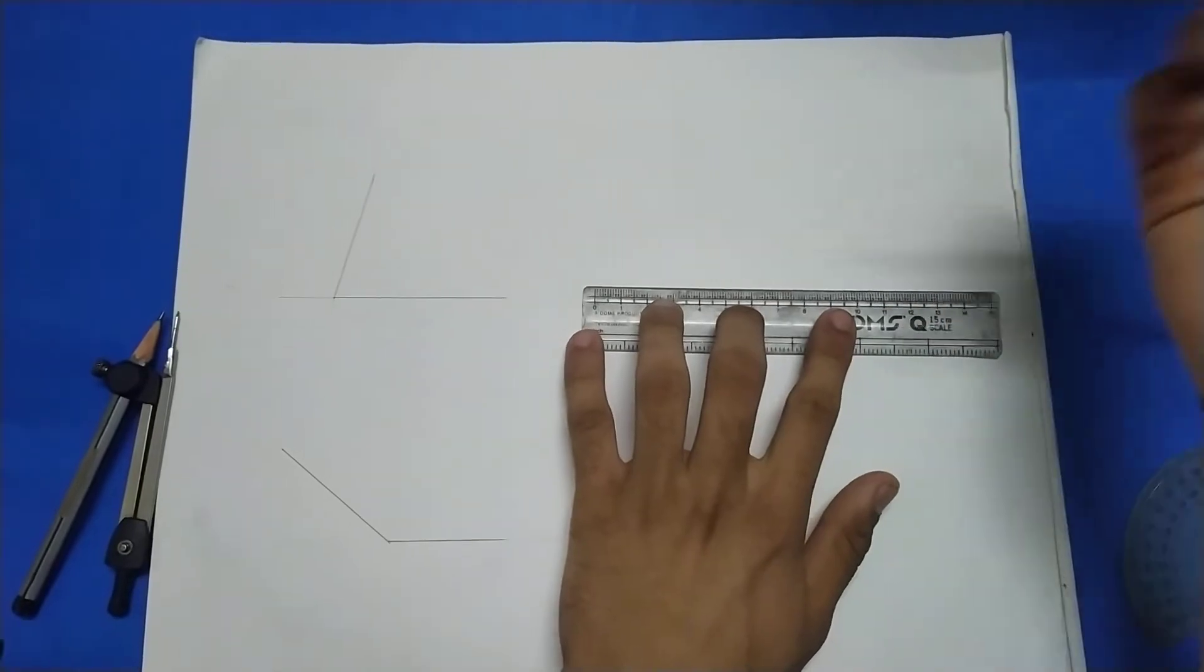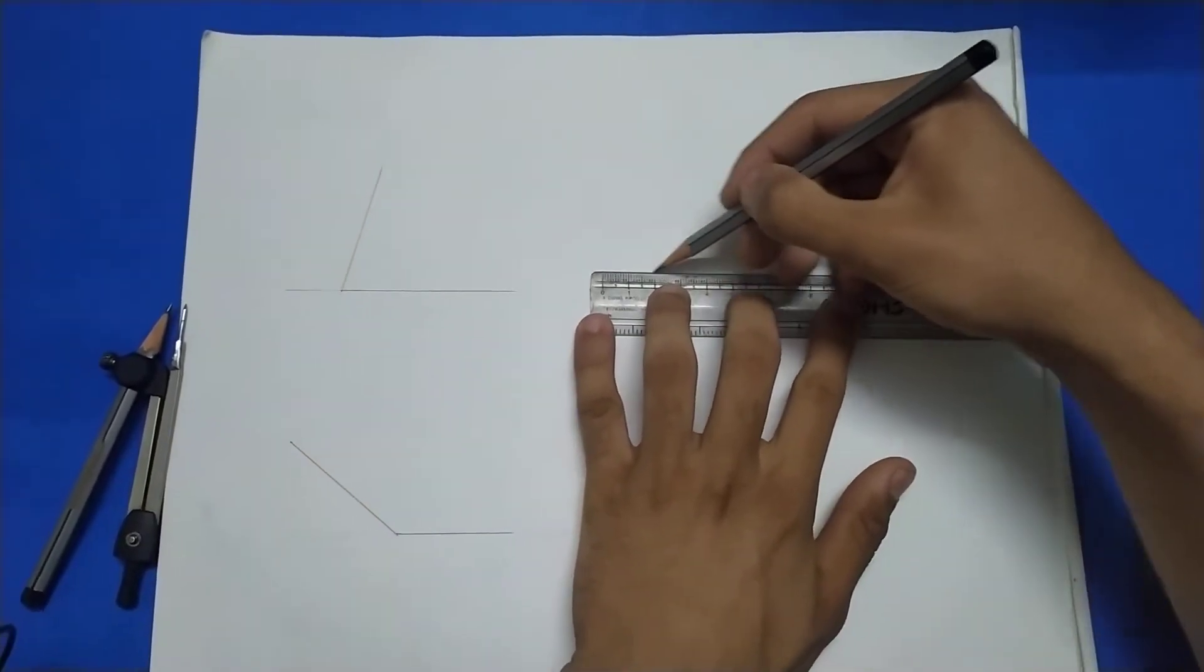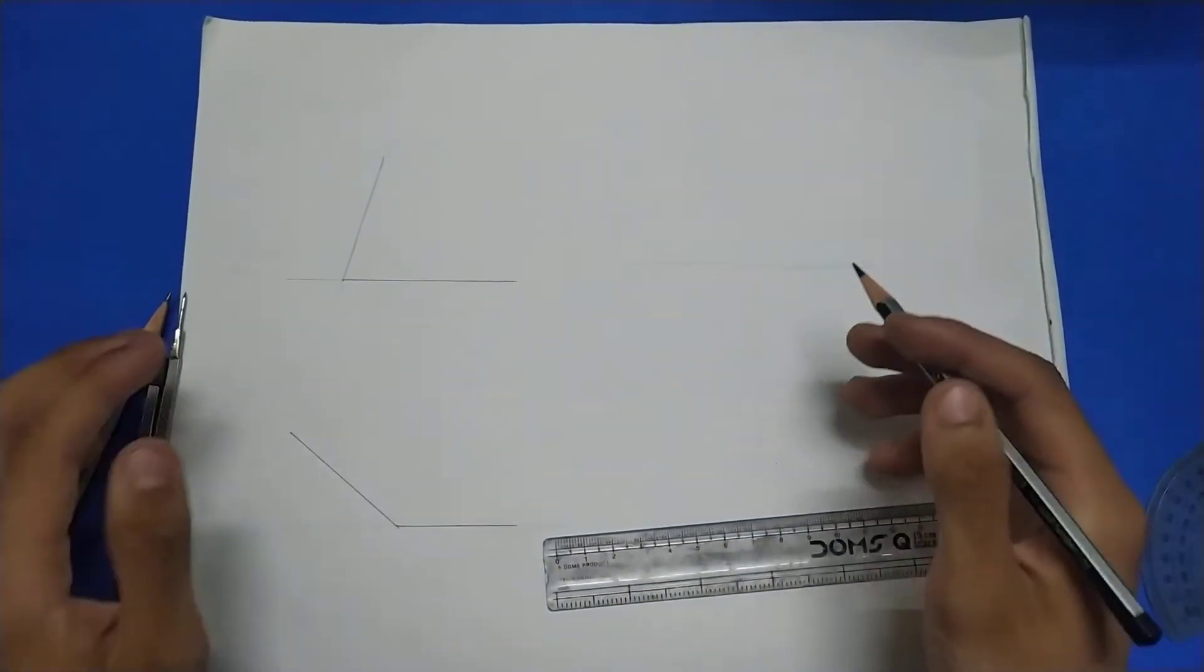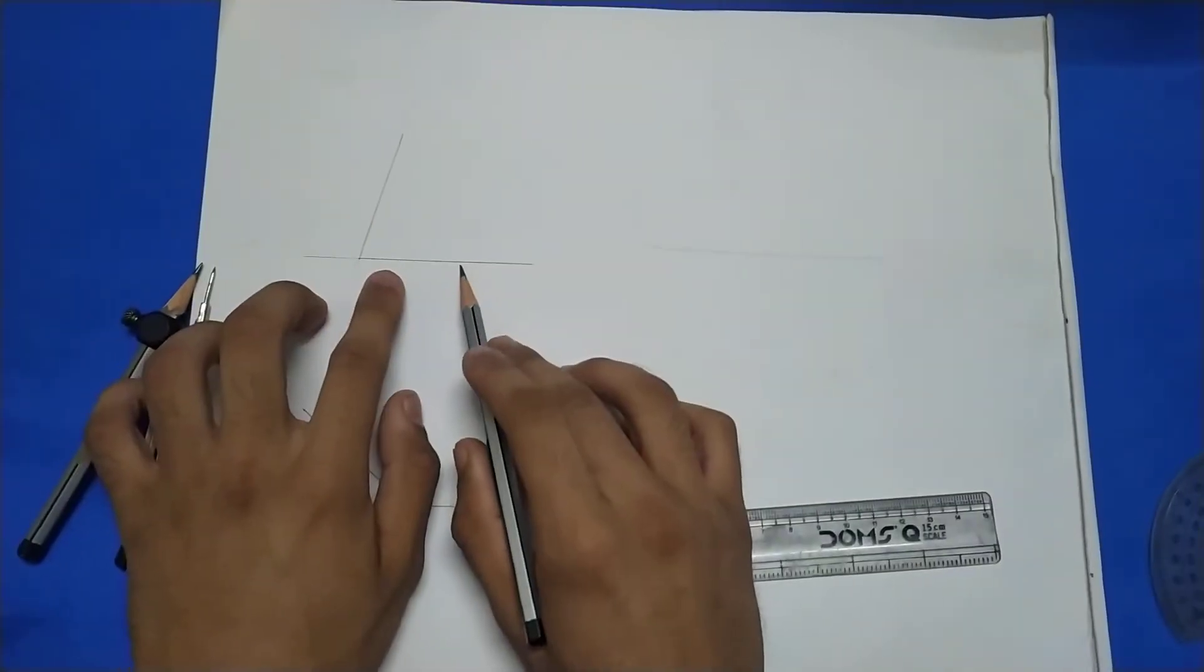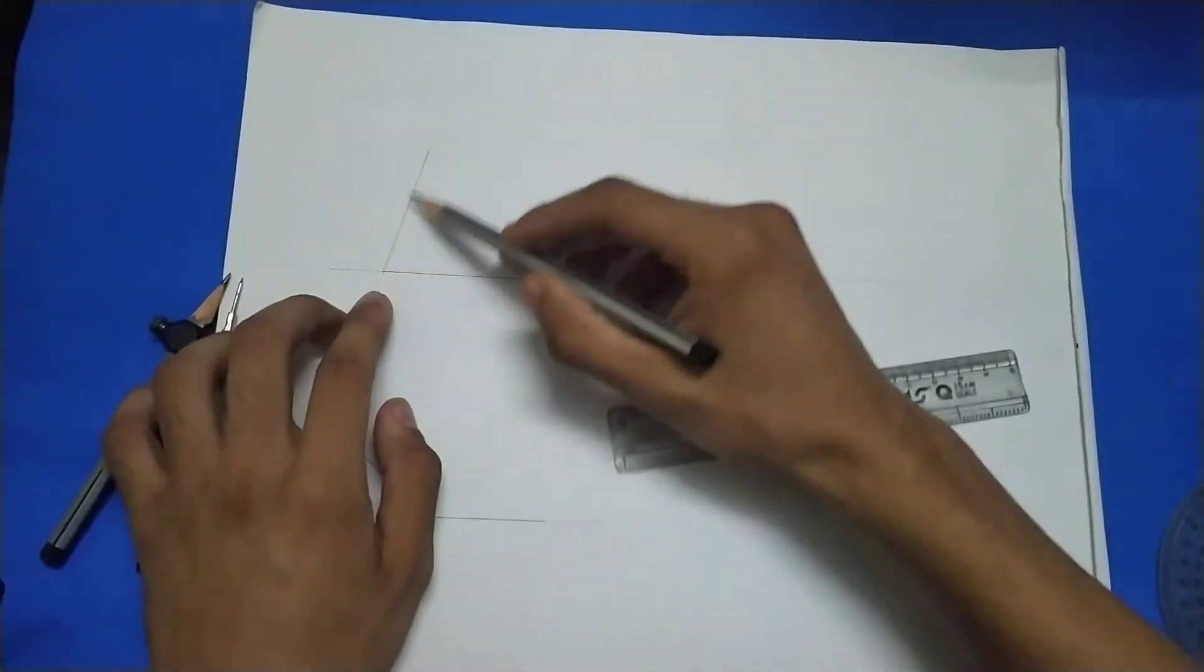First of all we start with a baseline. This is the line where you want to draw this ray and take a point, just say this one. This will be the point from which we will extend this arm.